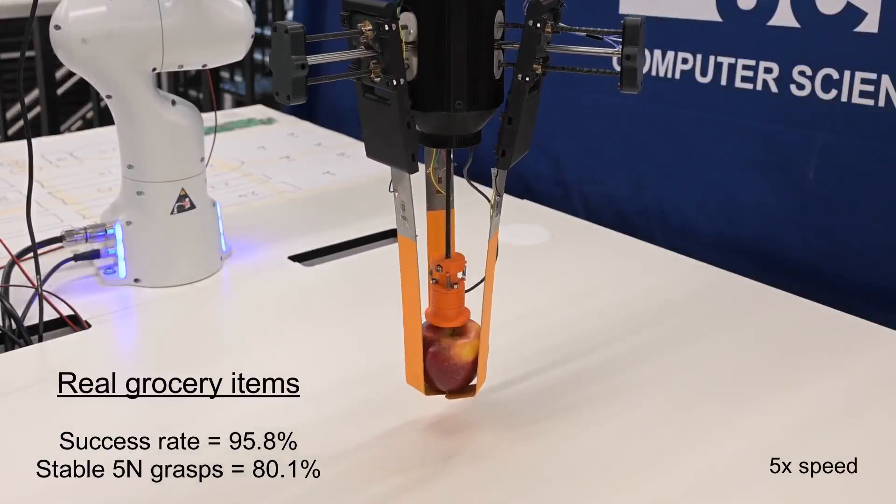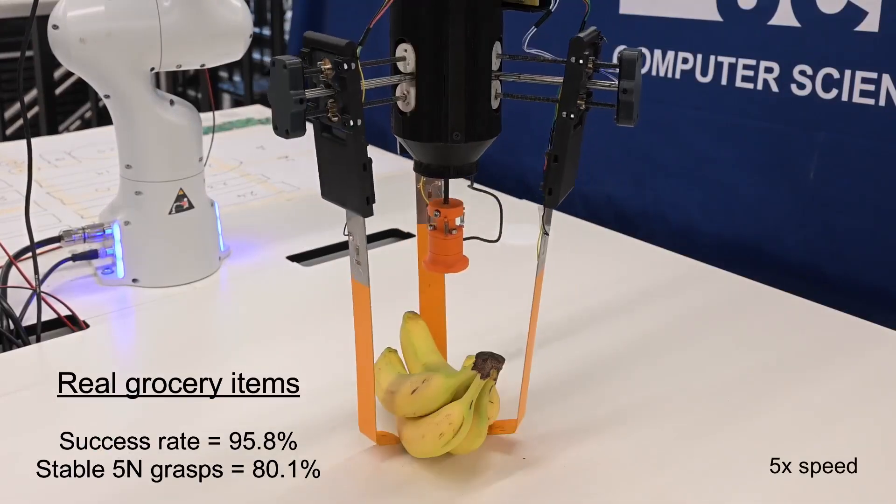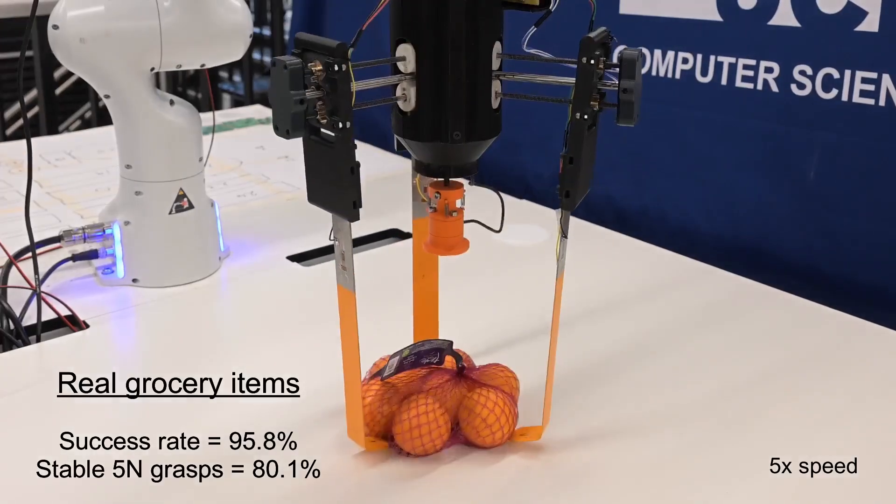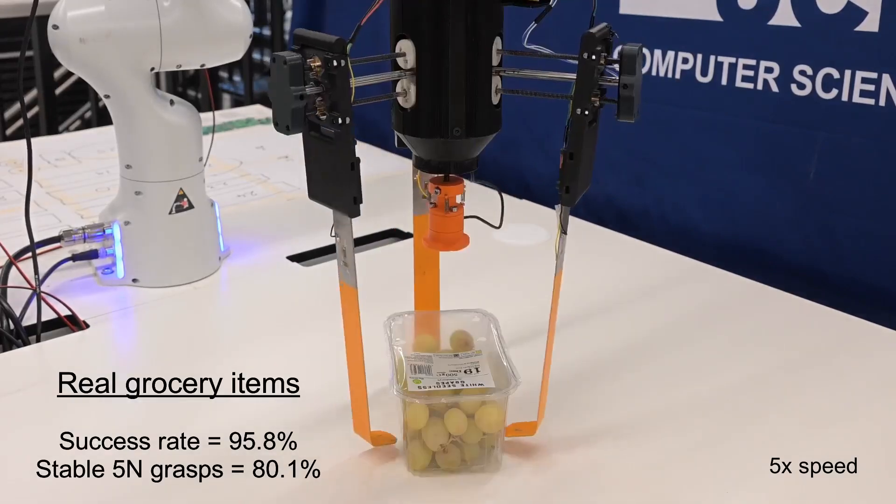We test the generalization of our reinforcement learning grasping controller on unseen and challenging grocery objects. We achieve a 95.8% rate of successful grasps, with 80.1% of these being stable 5N grasps.